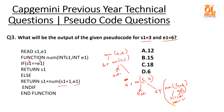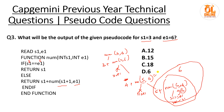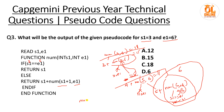Unwinding the recursion: num(6,6) returns 6, so 5 plus 6 is 11. Then 4 plus 11 is 15. Then 3 plus 15 is 18. So num(3, 6) equals 18 — option C, 18, is the correct answer. Moving to the next question.